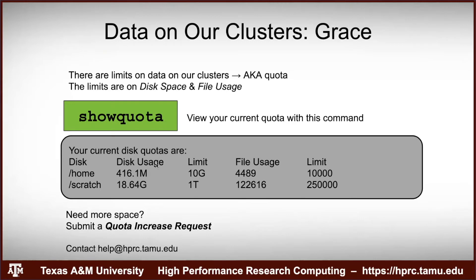This example is from Grace. You can see the two file systems — home and scratch. It shows your usage and the limit. If you need more space than the default, you can submit a quota increase request. That's basically a request saying your research requires more space than the default, describing your research and why you need more space.